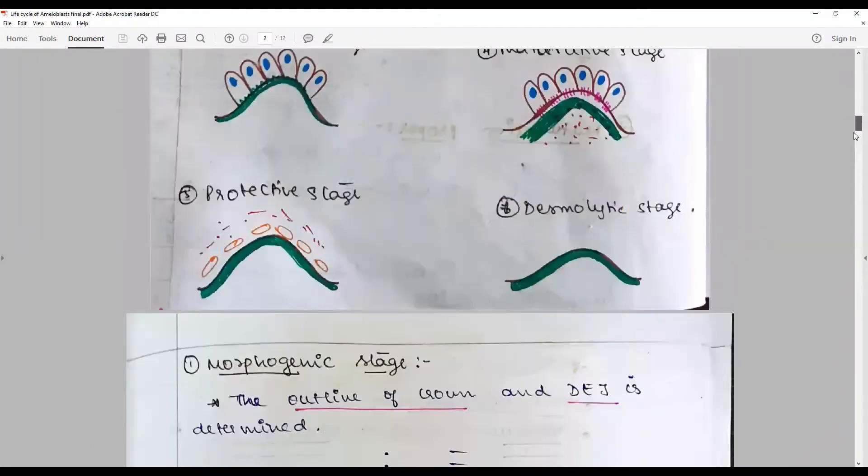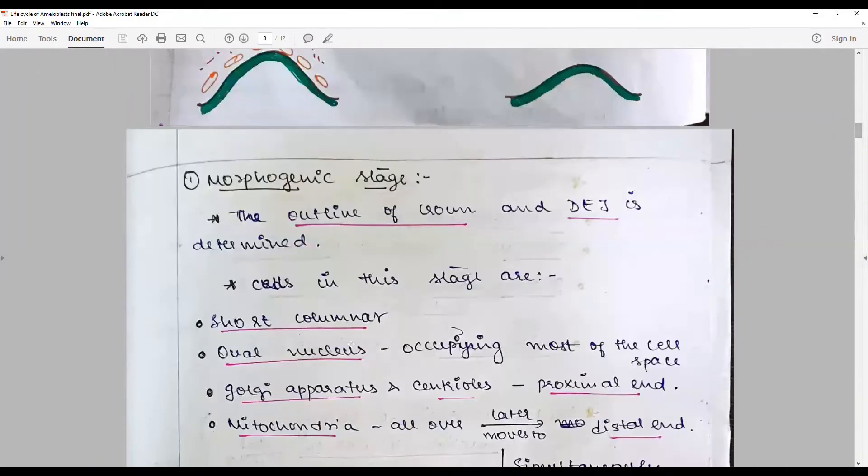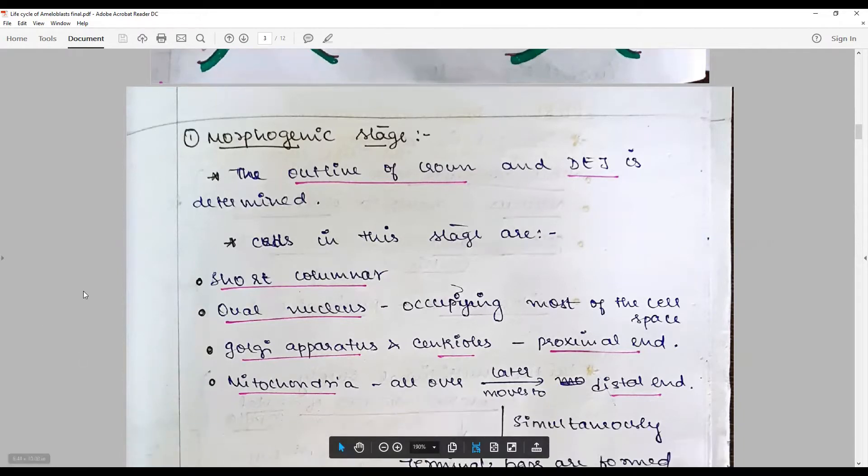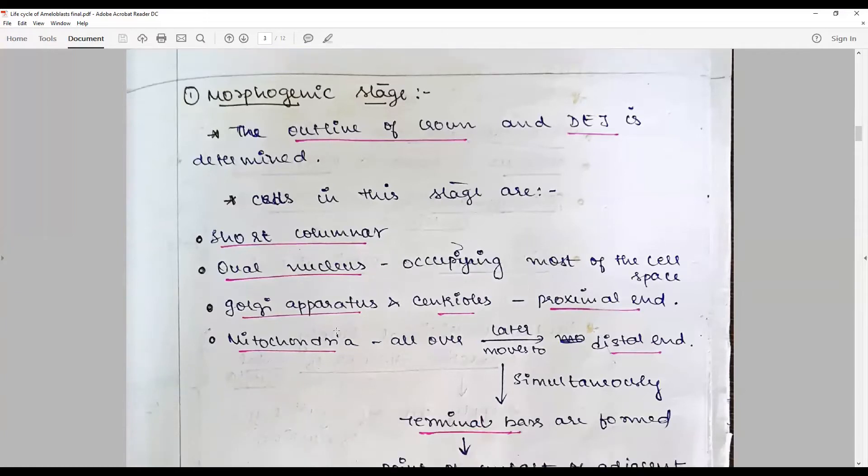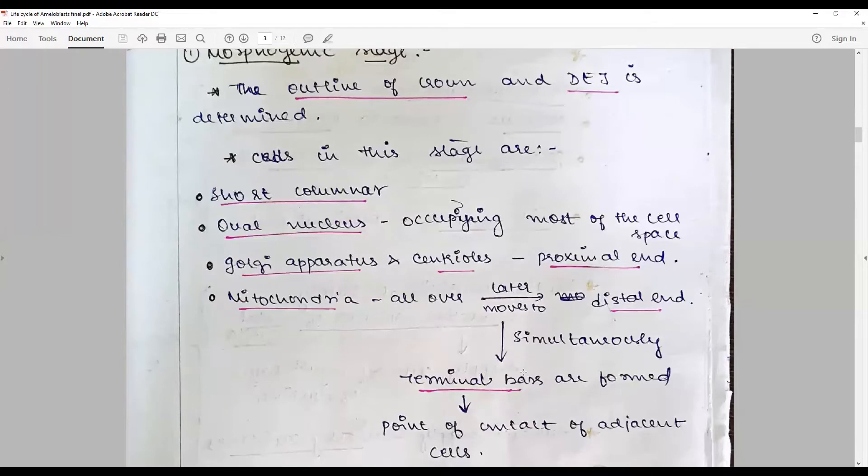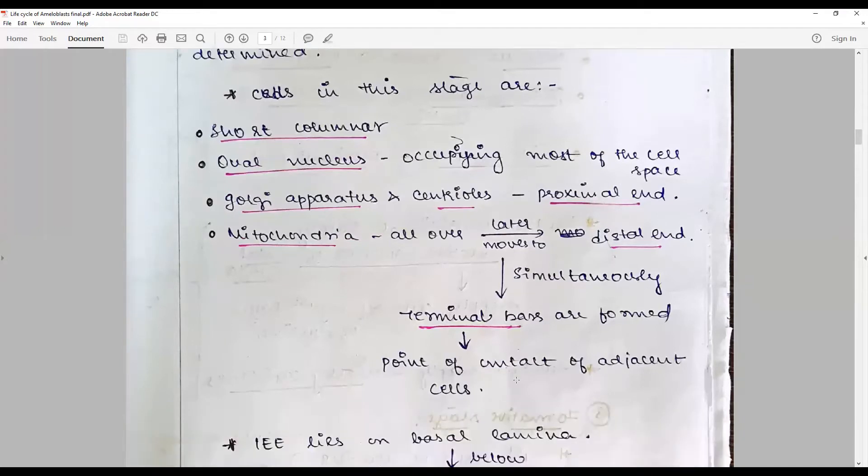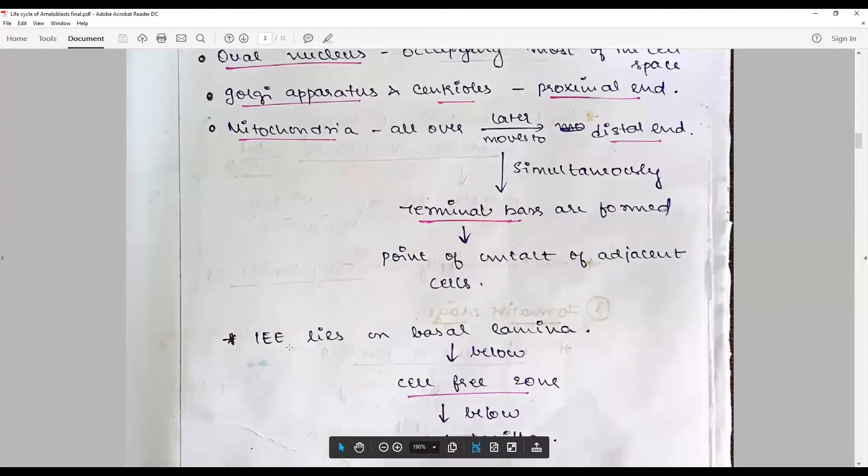Morphogenetic stage: at this stage, the outline of crown and the future DEJ is determined. The cells in this stage are short columnar with the oval nucleus occupying most of the cell space. Golgi apparatus and centriole in the proximal end and mitochondria distributed all over. As the stage progresses, it moves towards the distal end. Terminal bonds are formed, and point of contact of adjacent cells between the ameloblasts are created.